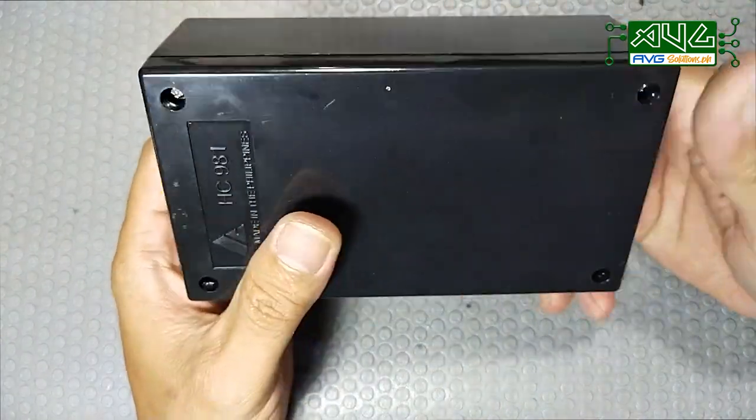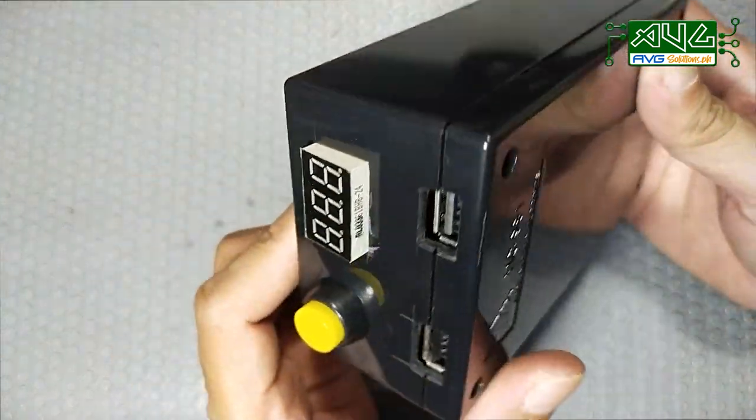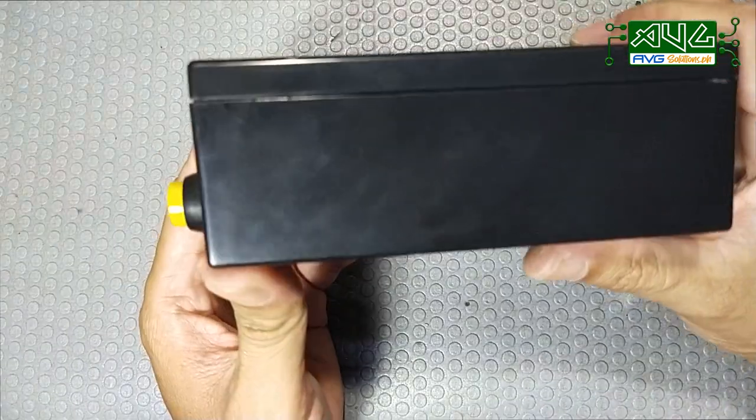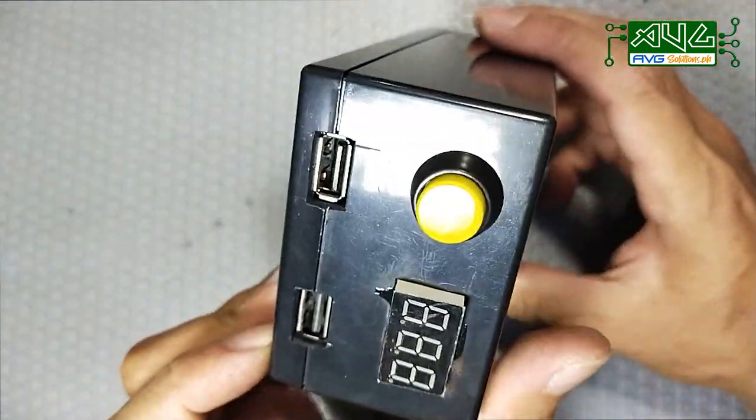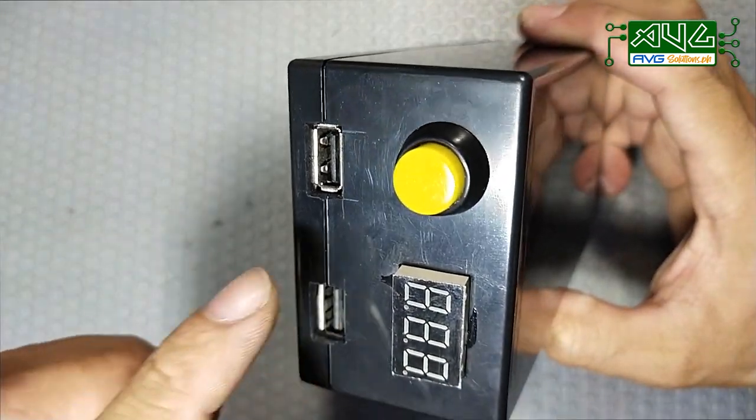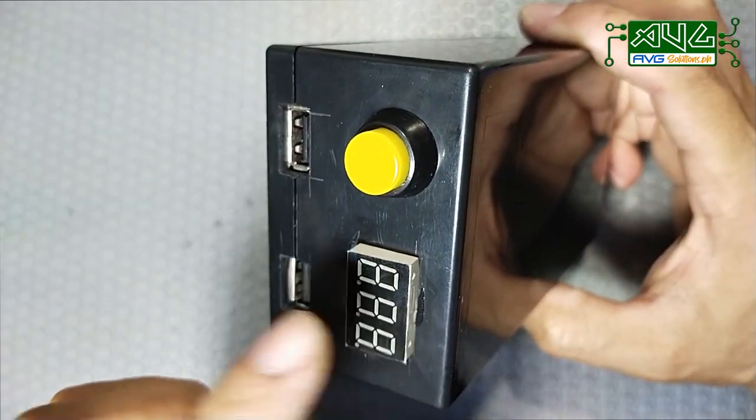At ayan, meron na tayong DIY solar powered power bank. Meron tayo dito ang dalawang input, USB 5V lahat ang output nyan, power switch, LED indicator.